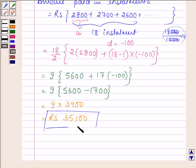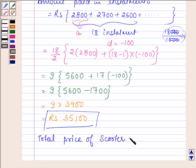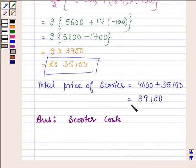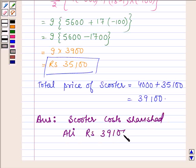So Rs 35,100 is the amount paid by him in installments. The total price of the scooter is equal to the cash down payment of Rs 4,000 plus the amount paid in installments which is Rs 35,100. So this is equal to Rs 39,100. Therefore our answer is Rs 39,100. This completes the solution. Take care and have a good day.